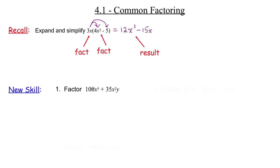Do 100 and 35 have 10 in common? No. It looks like 5 is the greatest common factor for the numbers. So this will equal 5 times something. What about the variables? Here are 5 x's and here are 2 x's. They have 2 in common. So we include x² in the GCF. Do they have a y in common? No — only the 35 term has the y. So the greatest common factor is 5x².